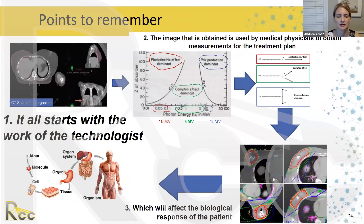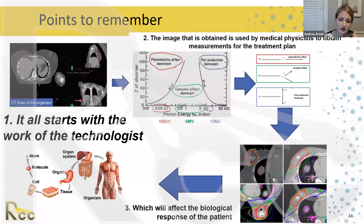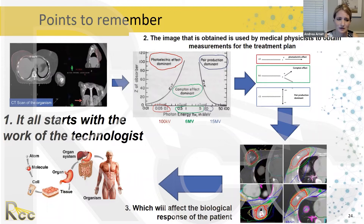The main points to remember: it all starts with the technologist getting an accurate and clear scan. Accurate imaging is critical because medical physicists use these images to obtain measurements for the treatment plan. If the imaging accurately represents the tissues, this will significantly affect the biologic response and degree of side effects the patient experiences — making it a complex but essential process for creating a safe radiation plan.